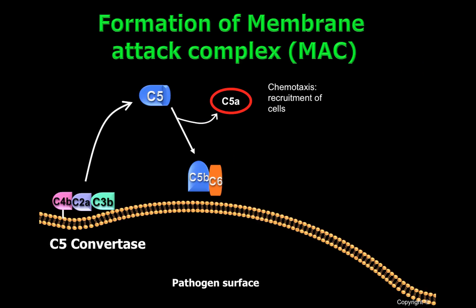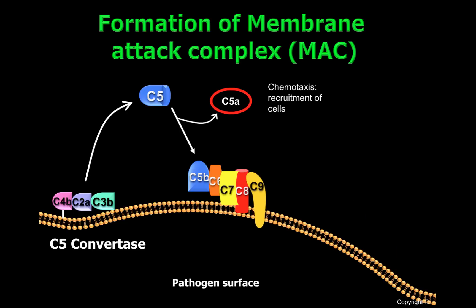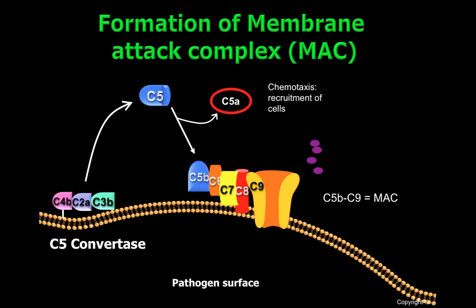C5-B will be able to recruit C6, and C6 will bind to C7. The complex C5-B-C6-C7 will be able to bind to the cell membrane of pathogens. When this happens, C8 will be able to be inserted in the cell membrane of a pathogen, and C8 will recruit several molecules of C9 in order to generate a pore on the cell surface of these pathogens. The complex C5-B to C9 is what is called MAC, or membrane attack complex. When MAC is formed, it will lyse the pathogens and destroy them.